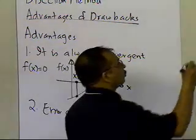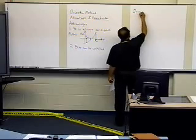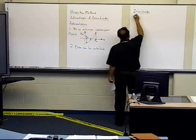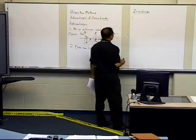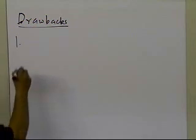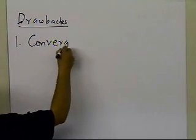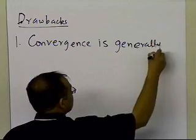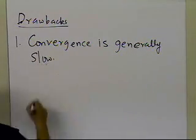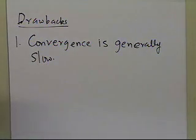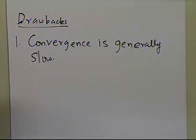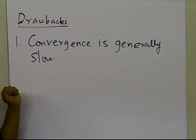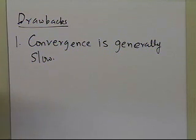Now let's look at some of the drawbacks of the bisection method. One of the main drawbacks is that convergence is slow. Although convergence is guaranteed, it is generally slow, because every time your interval is getting halved, that is the amount by which the error is reduced as you go from one iteration to another. If you take different examples of the bisection method and run them through, you'll find that this is the case.